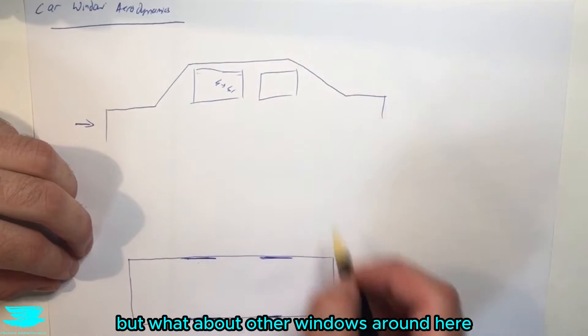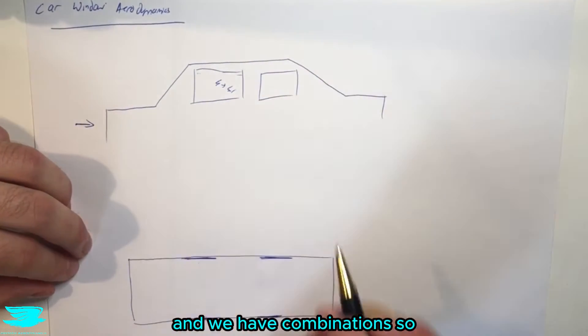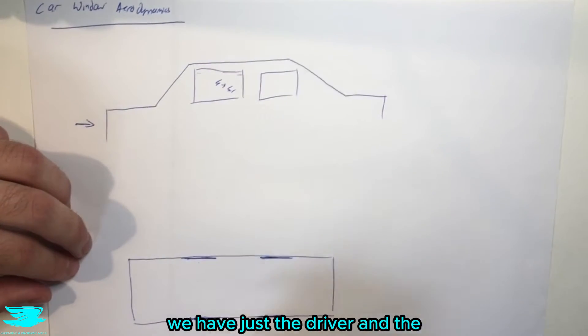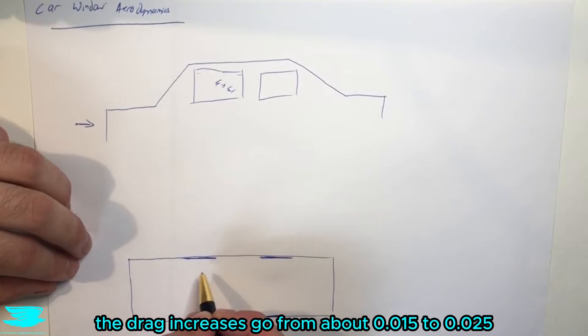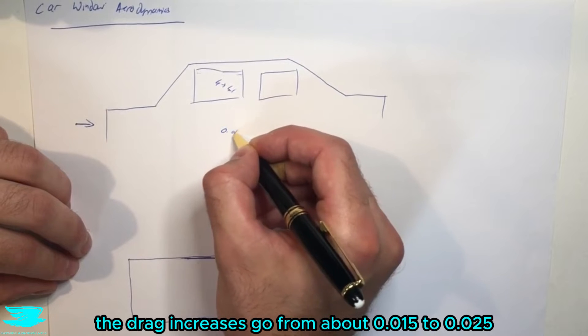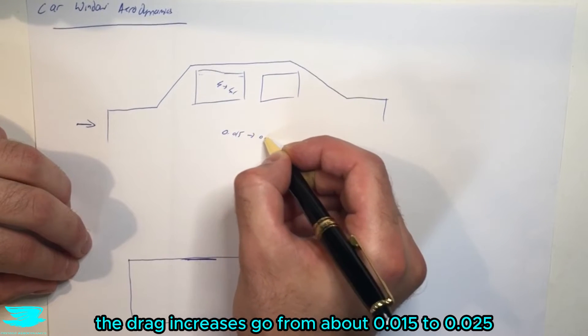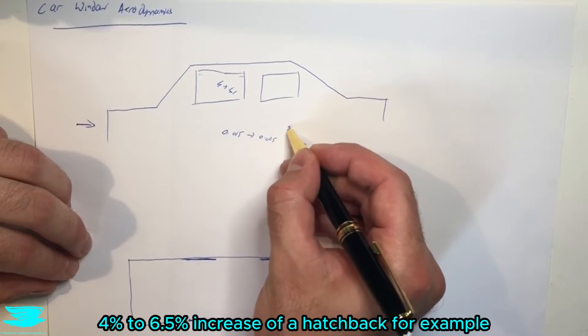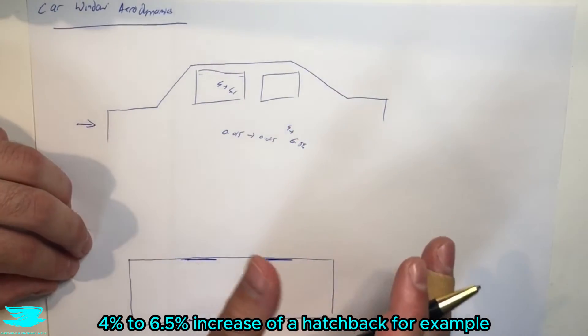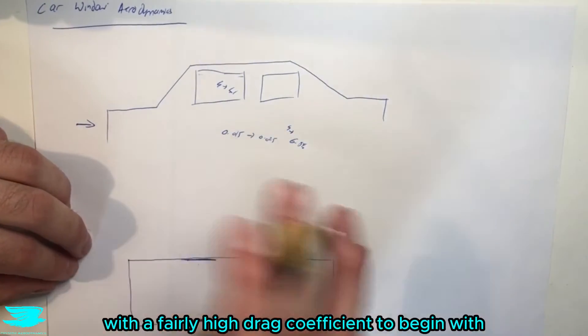But what about other windows around here? We have combinations. So let's say we have just the driver and the front passenger. Generally speaking, the drag increases go from about 0.015 to 0.025, which is about a 6.5% increase, 4% to 6.5% increase of a hatchback, for example, with a fairly high drag coefficient to begin with.